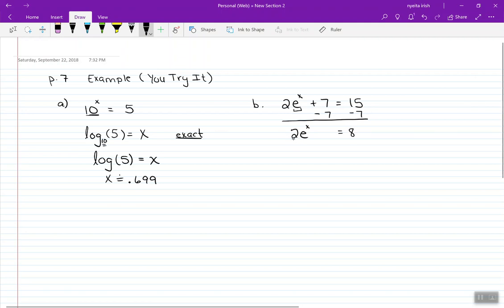To get rid of the 2 in front, since it's hooked by multiplication, we undo it with division. And now we want to undo the exponential. The thing that undoes exponentials are logarithms.